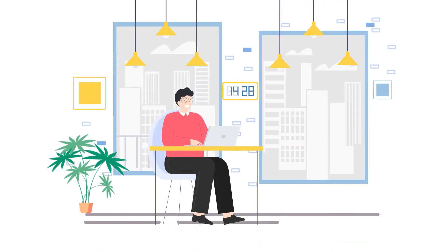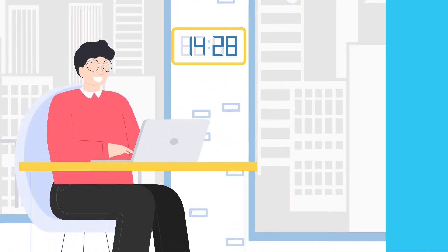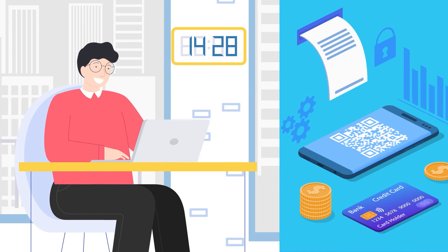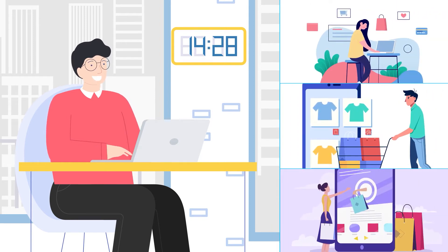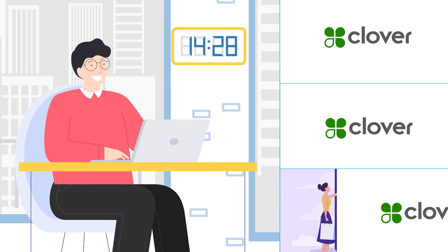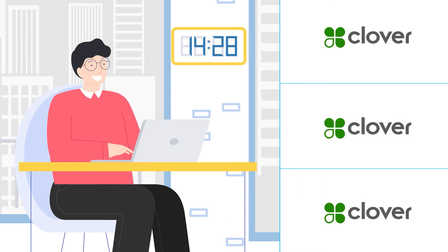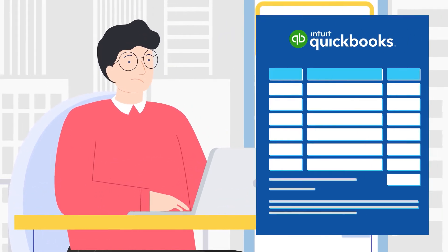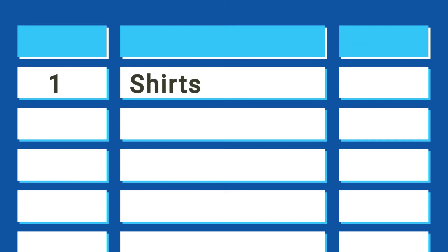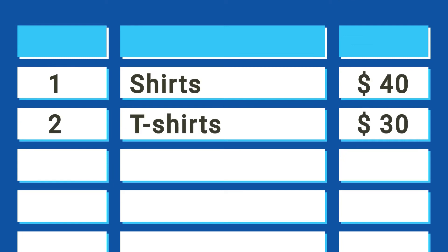Meet Jason, running his own online business. He's worked hard to build an extensive payment network through which his customers can easily buy his products using Clover. But Jason is not happy. He still has to spend countless hours correcting and manually entering the transactions into QuickBooks, and even after that he cannot be sure of accuracy.